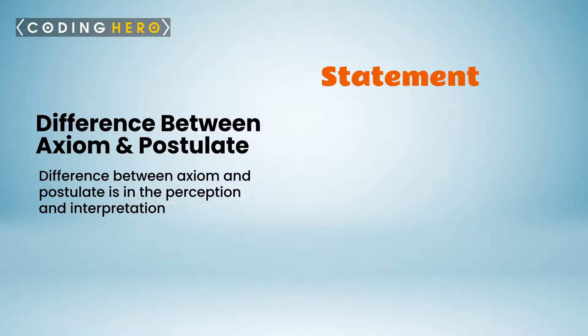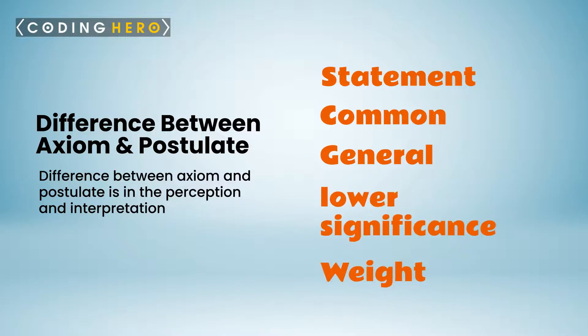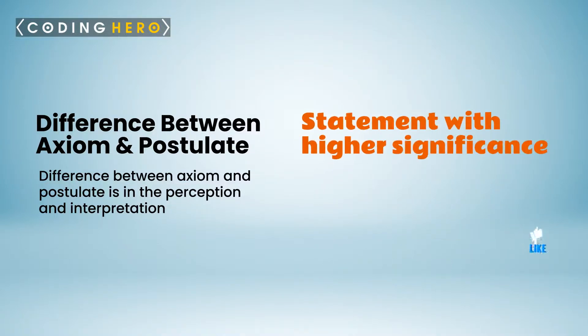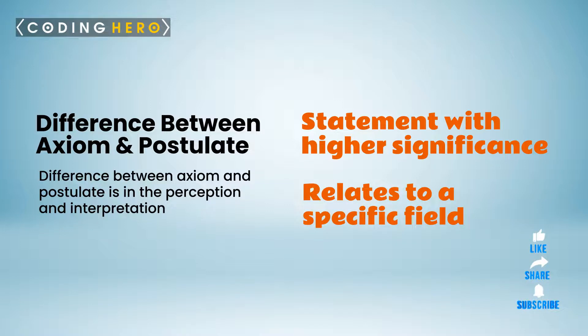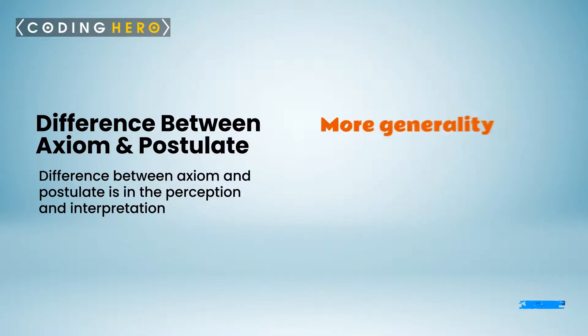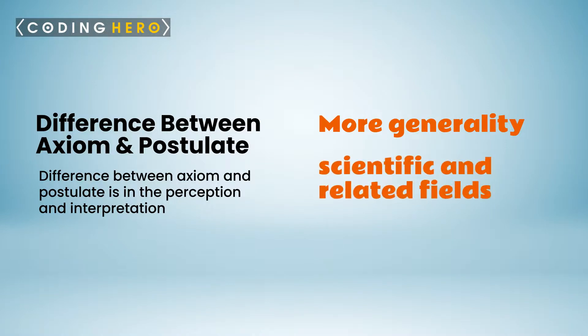An axiom is a statement which is common and general and has a lower significance and weight. A postulate is a statement with higher significance and relates to a specific field. Since an axiom has more generality, it is often used across many scientific and related fields.